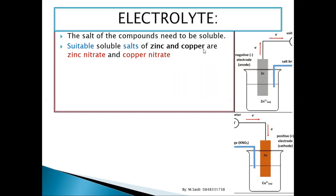For zinc and copper, suitable electrolytes are zinc nitrate and copper nitrate. In chemistry, all nitrates are soluble — they are able to dissolve. So on the side of the zinc half-cell you put zinc nitrate solution, and on the side of the copper half-cell you put copper nitrate solution. You can also use copper sulfate — they are suitable alternatives.